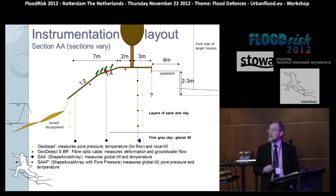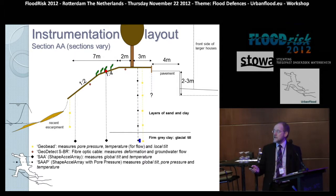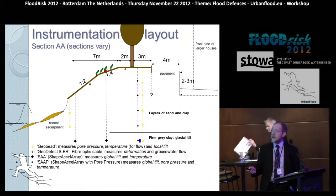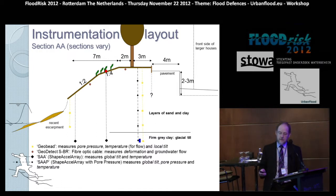Let's look at the Boston site. This is the typical instrumentation layout. We had a series of boreholes or SPT holes drilled, with geo-beads installed at various levels. The shape acceleration array is also installed, along with fibre optic cable run along the slope and back along the crest.